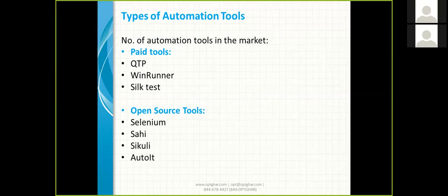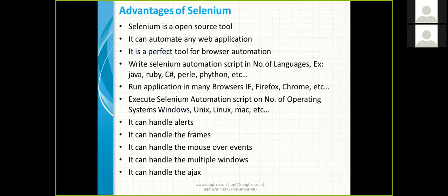There are different types of automation tools in the market: paid tools and open source tools. Paid tools include QTP, WinRunner, and SilkTester — these are very expensive. Open source tools include Selenium, Sahi, Squish, and AutoIt — these are free and can be downloaded from the internet.